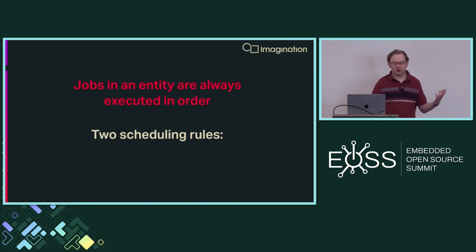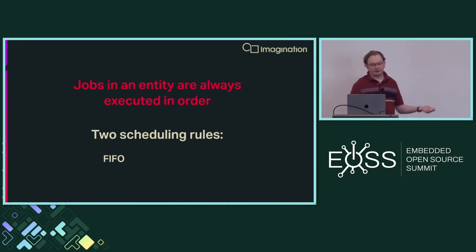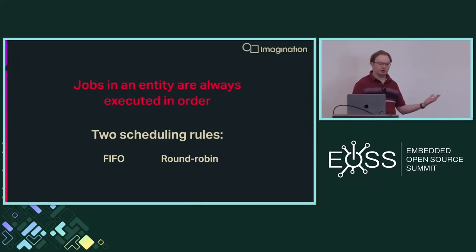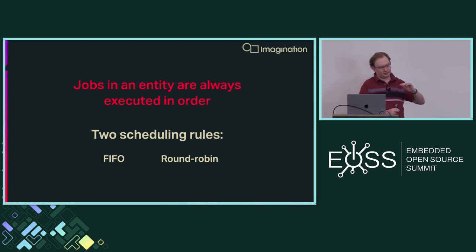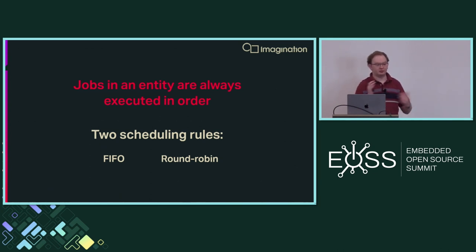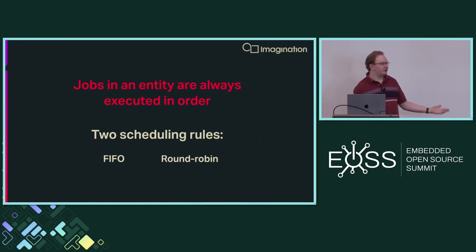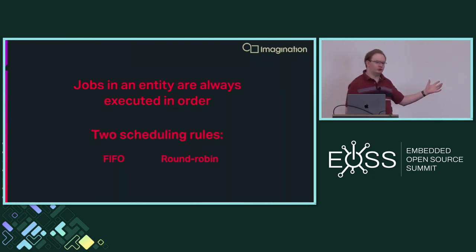Entities themselves have no direct relation to each other, but within a single entity those jobs are guaranteed to execute sequentially. The second rule is a scheduling rule — these define how entities are arranged in run queues. There are essentially two options: FIFO and round-robin. In FIFO, the run queues are strictly ordered; each entity has all its jobs executed in full before the scheduler moves on. In round-robin, jobs are selected from each entity in turn. In both cases, empty entities are skipped.